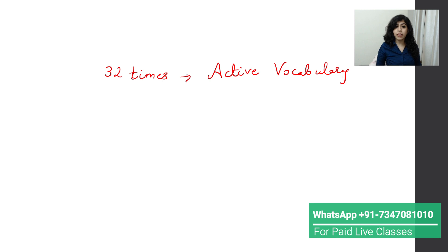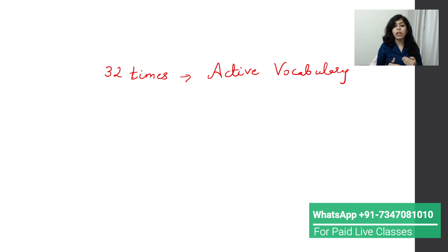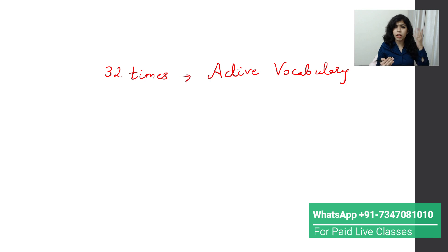It is called the 32 times rule. Let's say I know a new word and the word is 'rejuvenated.' I'm using the word rejuvenated again and again. I have used this word minimum 32 times in my speaking as well as in writing. If you use your word 32 times, you will actually get hold of this word and use it regularly. So use a particular word either in writing or in speaking for 32 times to convert it from passive to active vocabulary. Passive words are the words which we have read once or twice but do not use in our daily lives.